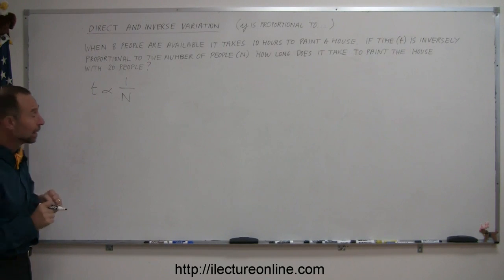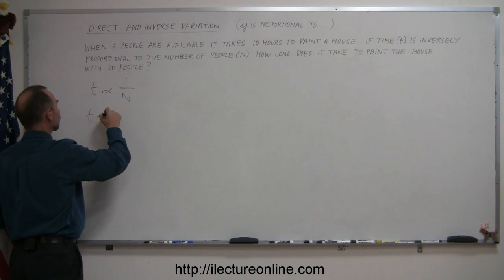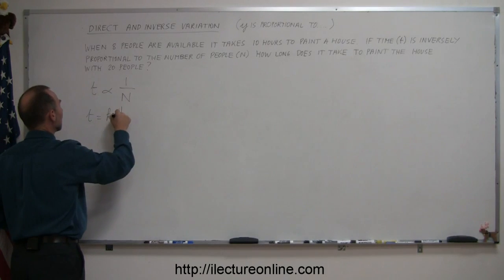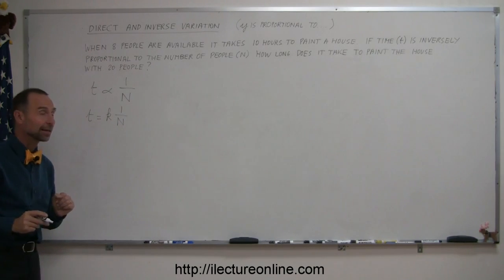Now we want to turn that into an equation. To do that we write t equals, and we have to introduce a constant of proportionality k times 1 over n, and now we have to figure out what this value of k is.